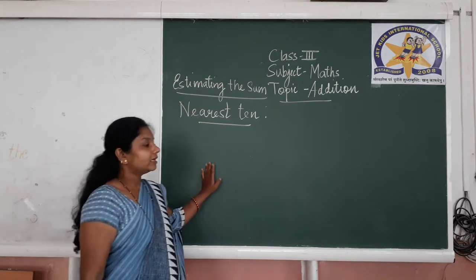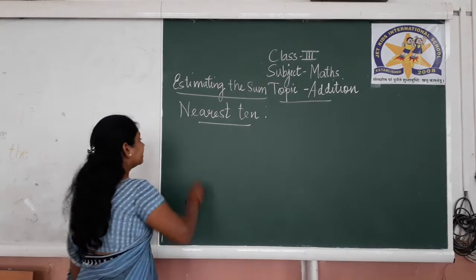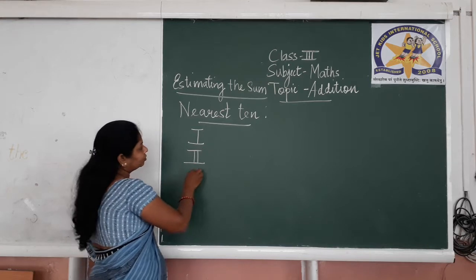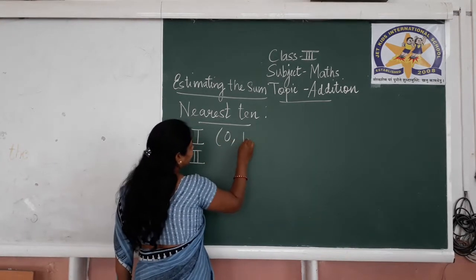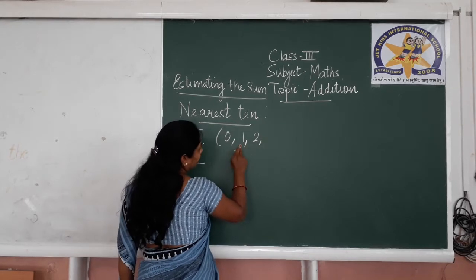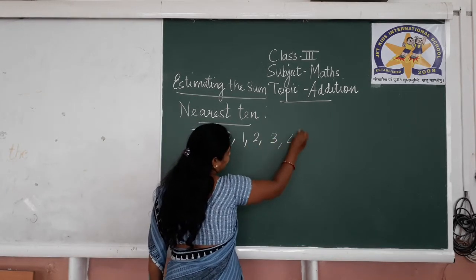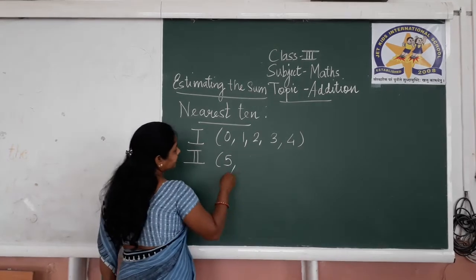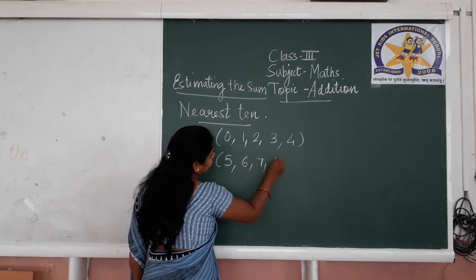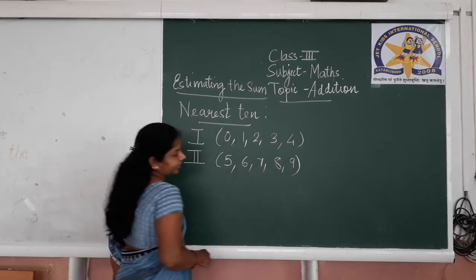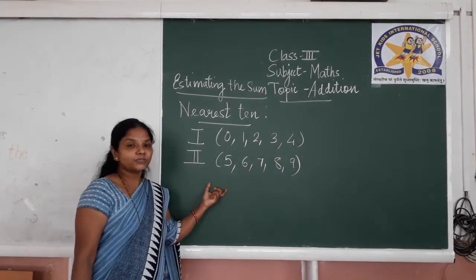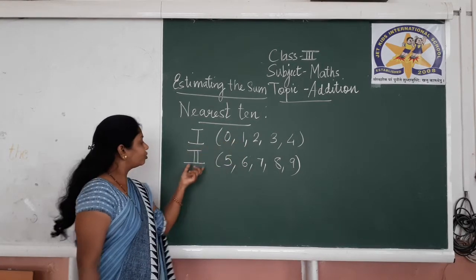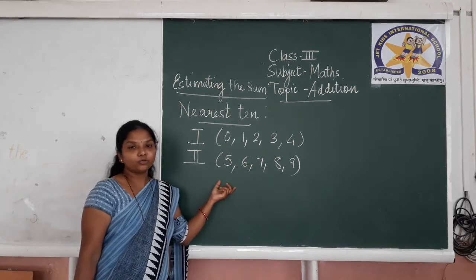I will give you a short trick. I have made two groups. Group 1 and Group 2. In Group 1, I wrote the numbers 0, 1, 2, 3, and 4. And in Group 2, I wrote the numbers 5, 6, 7, 8, and 9. So Group 1 contains numbers 0 to 4, and Group 2 contains numbers 5 to 9.